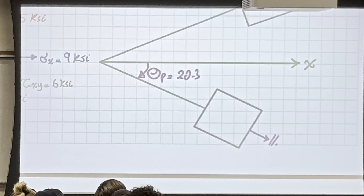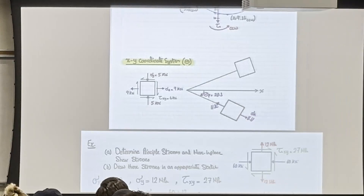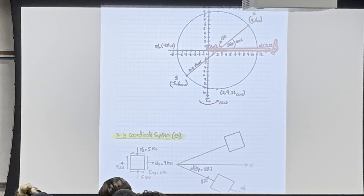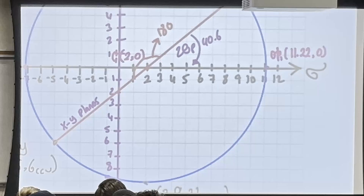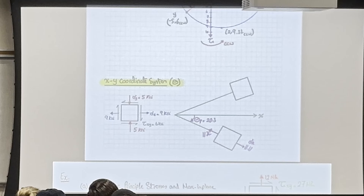Filling in the sketch: θ_p takes us to the principal plane, θ_s takes us to the shear plane. The principal element: x went from −60 compression to −69 compression, so σ_p2 = 69 in compression. The y-face went from 12 tension to 21 tension, so σ_p1 = 21 in tension. The shear element: x went from −60 to (−24, maximum shear = 45), which is 45 and counterclockwise.